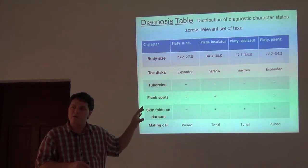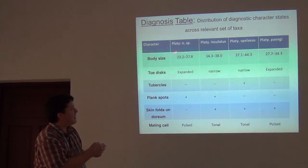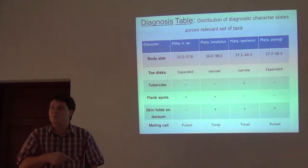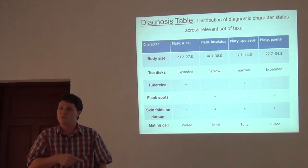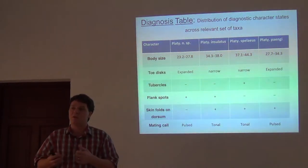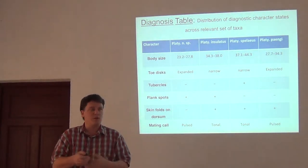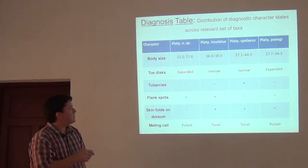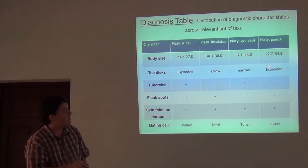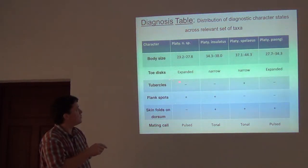Once you have this table, everything else flows. Body size in the new species is 23.2 to 27.8 — see how that doesn't overlap with any of the others in males. I can say that the body size of the new species is smaller than its most relevant related species. Diagnoses often take the form of a combination of character states — for toe discs, expanded toe pads distinguish the new species from Platymantis insulatus and Platymantis spoliatus, but don't distinguish it from Platymantis paengi, because that one also has expanded toe pads.